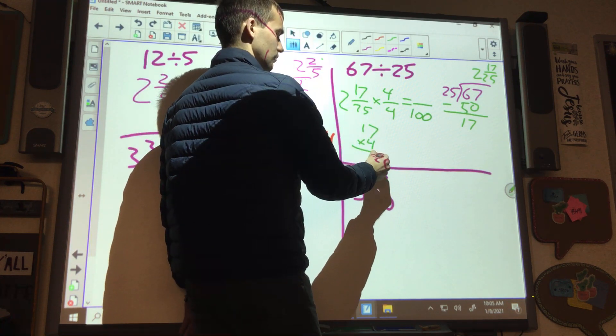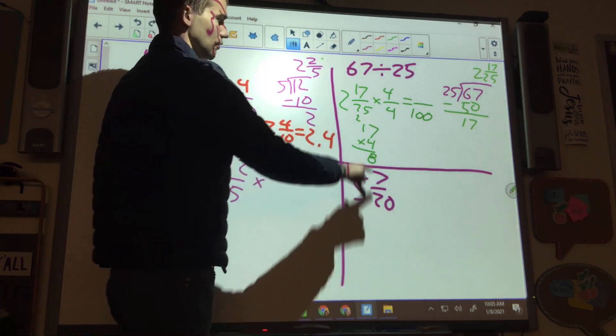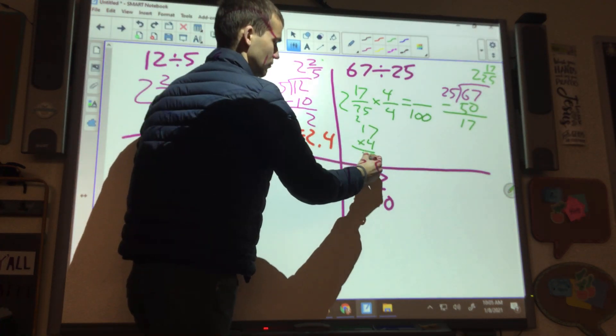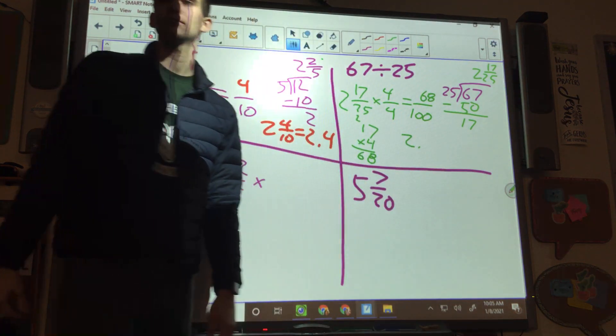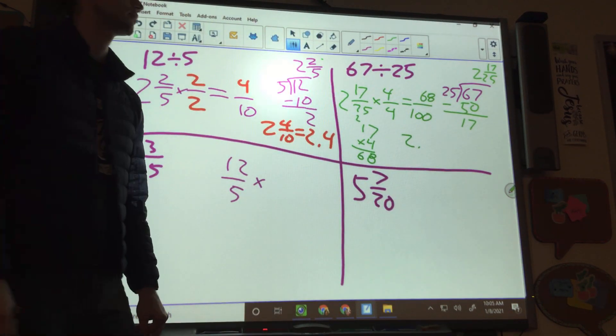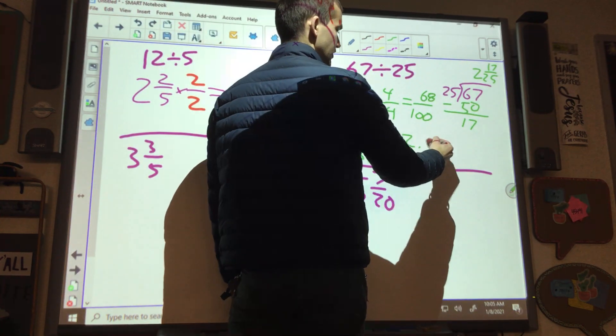So I gotta do 17 times 4. 7 times 4 is 28. 28. 4 times 1 is 4. Plus 2? 6. So I get 68 over 100. So then my decimal is 2 and? 2. 2.68. 2.68.